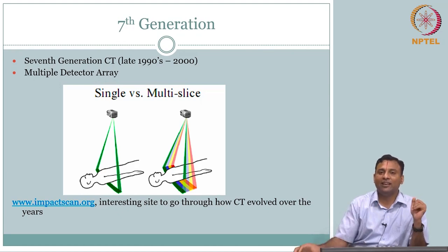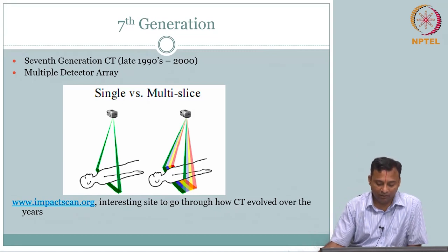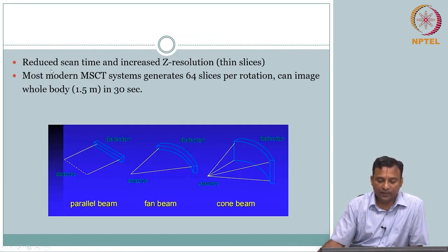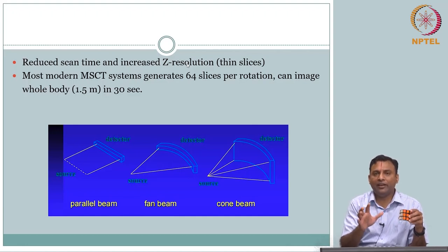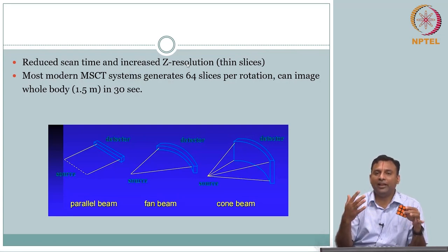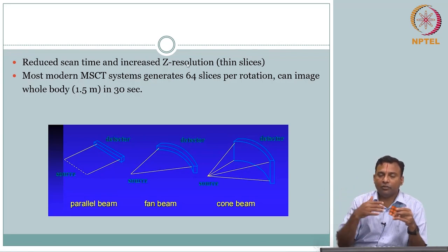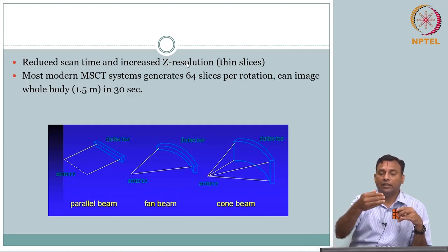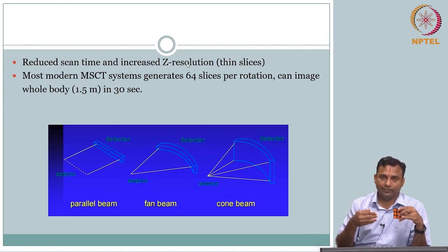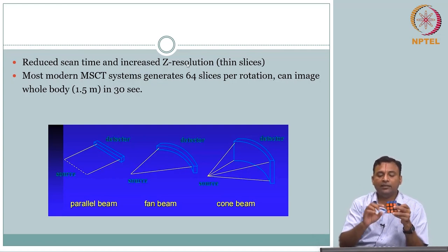In summary, we have just covered the data acquisition generations and how they have come along. The idea is reduced scan time and increased Z-resolution. Z is the direction — X and Y are used for the plane of the image, and Z is the thickness direction. If you have multiple detectors, slice thickness can be improved because it depends on the size of the detector. You can get 64 slices per rotation and image the whole body in about 30 seconds. These are the different geometries discussed: pencil beam for first generation, then fan beam, and for multi-detector arrays — cone beam, where you have your detector array stacked volumetrically.